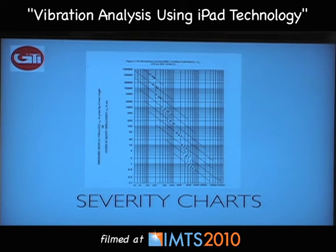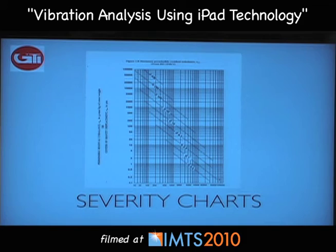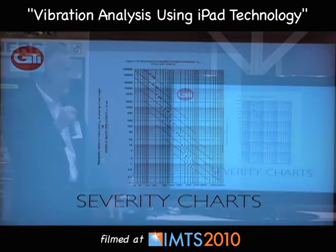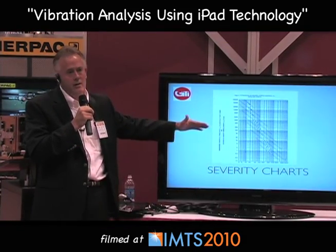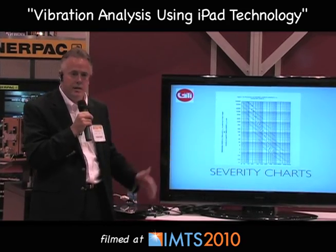There are more severity charts available as well. A lot of people ask what's good and what's bad in vibration readings. There are charts on the web you can pull up right on screen that will tell you — based on what you're running, whether it's a drive motor, a precision spindle, or a ball screw — where your readings fall in the severity chart and what levels you should not be exceeding.